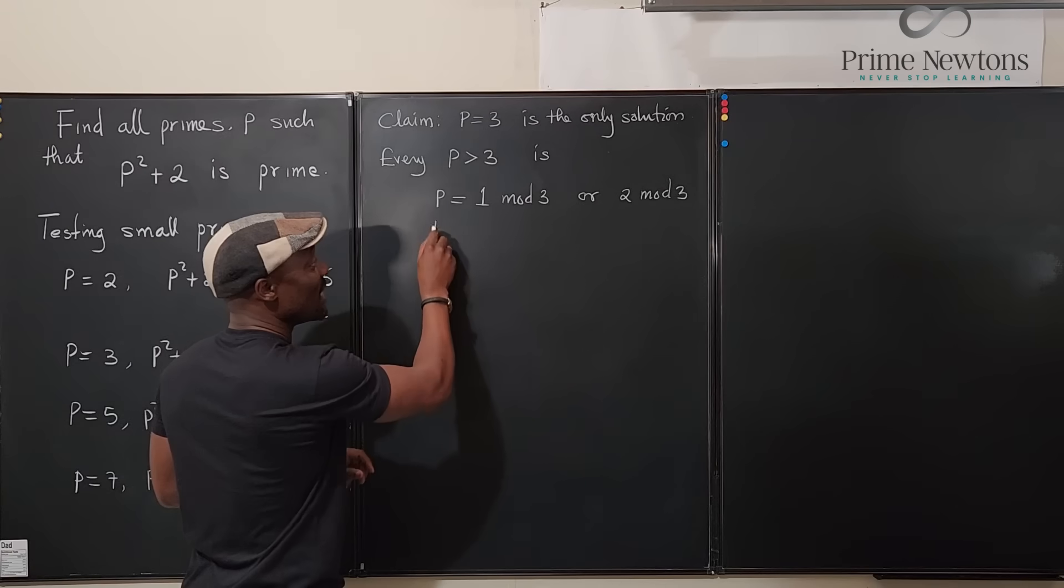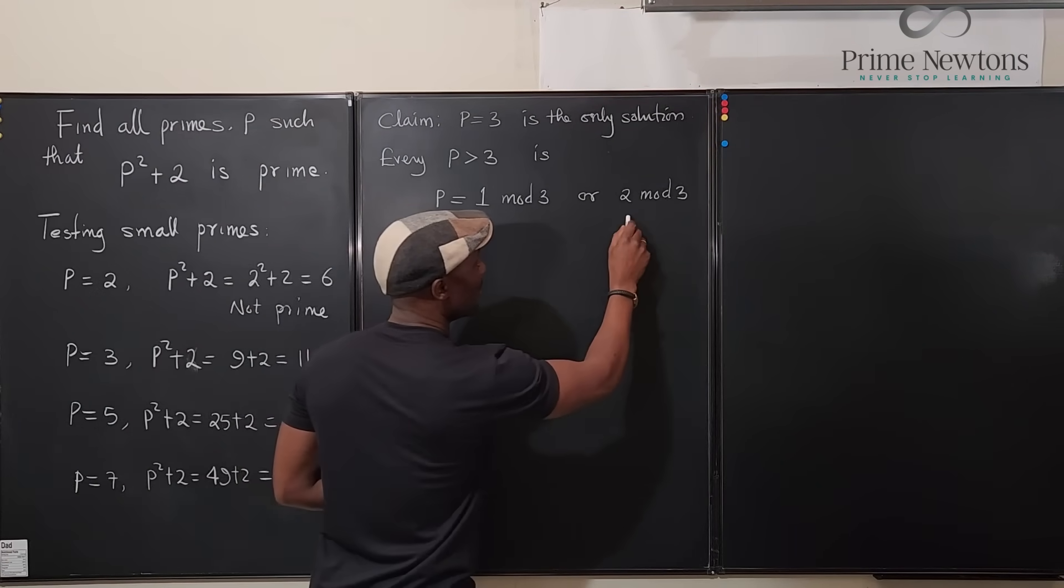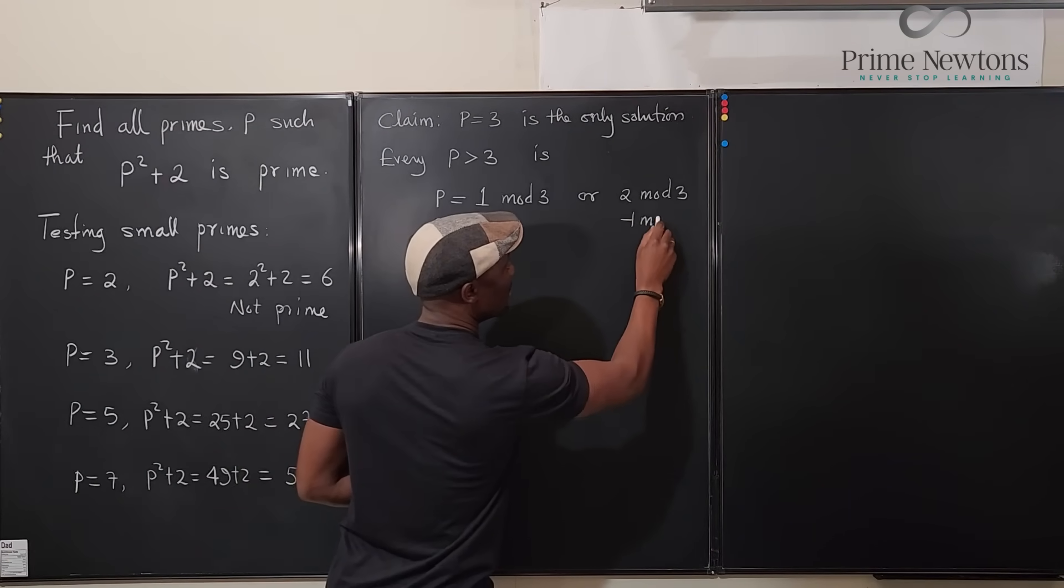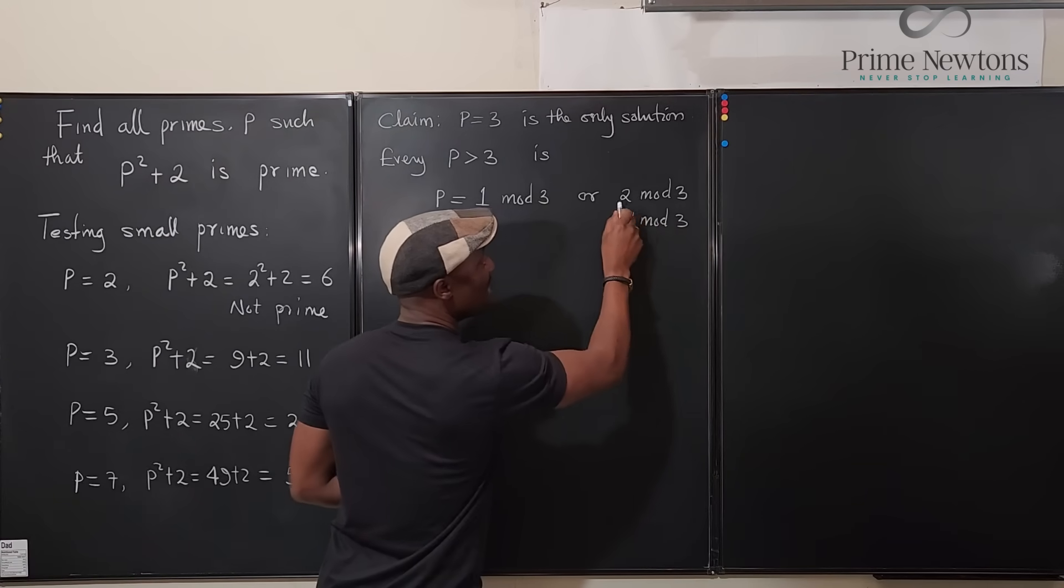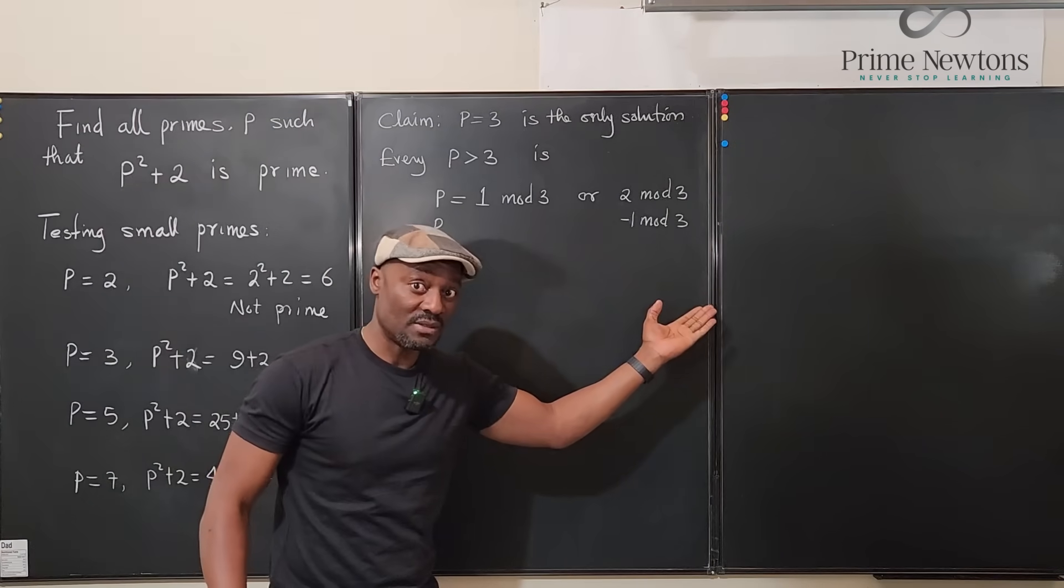But what I want to do is I don't want to write 2 mod 3 because 2 is 1 less than 3. So we can say that it is p, this is the same thing as p equals minus 1 mod 3. This is another way of writing this. Okay, another way of writing 2 mod 3 is negative 1 mod 3.